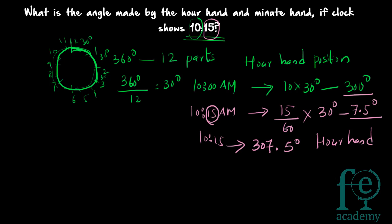For the hour hand: a clock is 360 degrees divided into 12 equal parts, giving 30 degrees per hour. For 10 a.m., that is 10 × 30 = 300 degrees. For the additional 15 minutes, it is 15/60 × 30 = 7.5 degrees. So the position of the hour hand at 10:15 is 300 + 7.5 = 307.5 degrees.